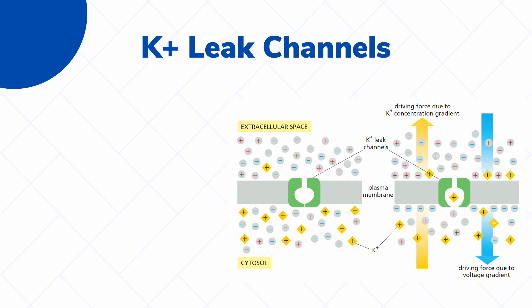Although the sodium-potassium pump does play a role in maintaining the negative membrane potential of the cell, the role it actually plays is incredibly small. Another protein, which we call potassium leak channels, are the ones that contribute greatly to the very negative membrane potential of the cell. In this first part of the figure, you can see our potassium leak channels in their closed state, with an almost equal distribution of positive and negative ions on the extracellular and intracellular sides.